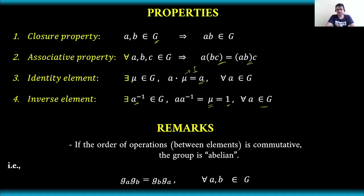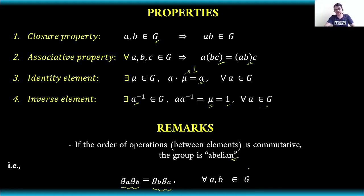Now, if the order of operations between elements can be interchanged — that is, if they are commutative — the group is called an Abelian group. For example, if we have operations g_a times g_b and we can interchange the order to write g_b before g_a, such that for all A, B elements of the group this holds, then we call it an Abelian group.